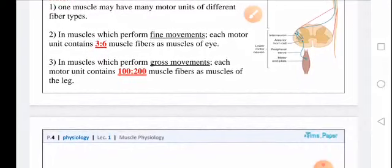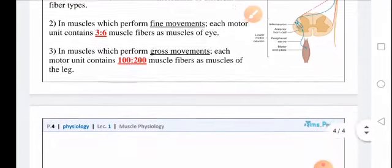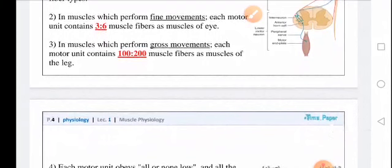In the muscle which perform gross movements, each motor unit consists of 100 to 200 muscle fibers. And the example is the muscles of the leg.